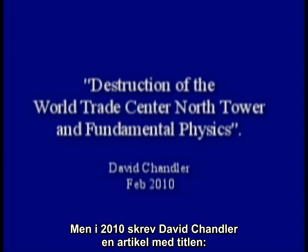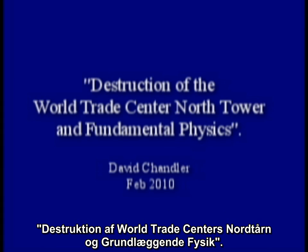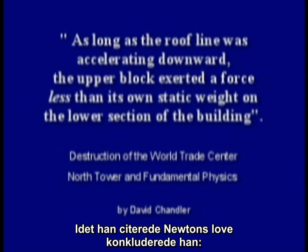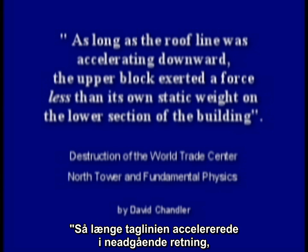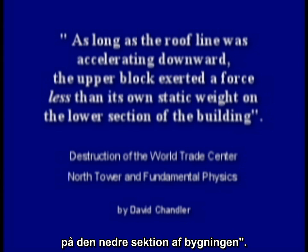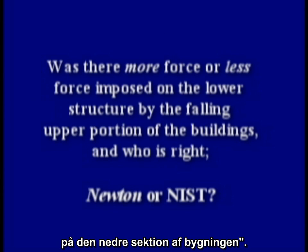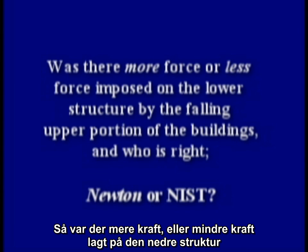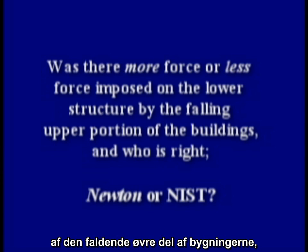But in 2010, David Chandler wrote a paper called Destruction of the World Trade Center North Tower and Fundamental Physics. Citing Newton's laws, he concluded: as long as the roof line was accelerating downward, the upper block exerted a force less than its own static weight on the lower section of the building. So was there more force or less force imposed on the lower structure by the falling upper portion of the buildings? And who is right?